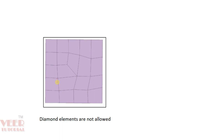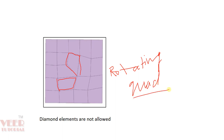Here we can see we have a tria element, but this element is a diamond shape — these are called rotating quads, also called diamond elements, and we should avoid them. When we perform the analysis, the load is transferred from one node to another node. If the nodes are aligned, the load will transfer properly. But if the nodes are arranged as in rotating quads, the flow is not good and the load will not transfer properly. That is why we should avoid rotating quads.